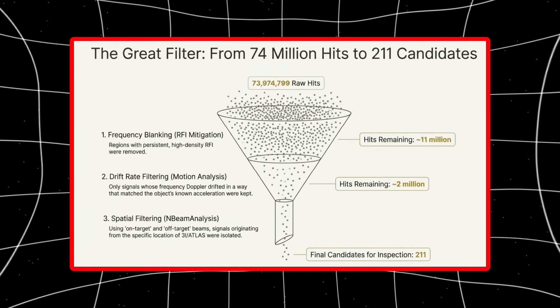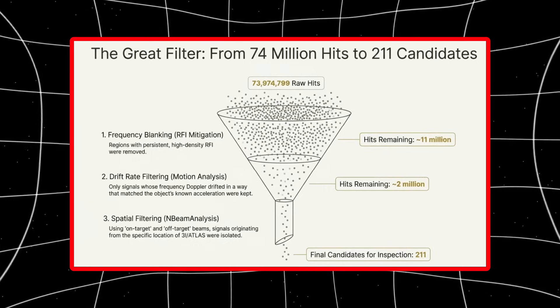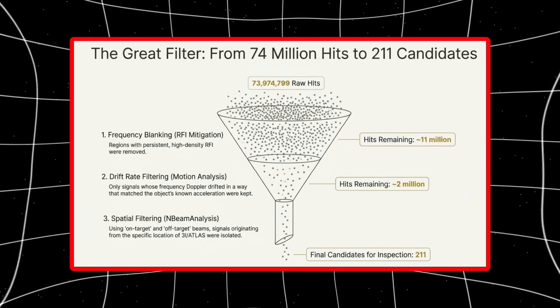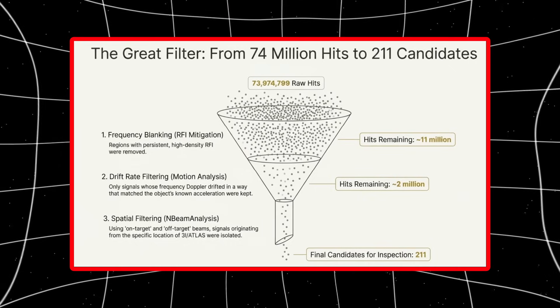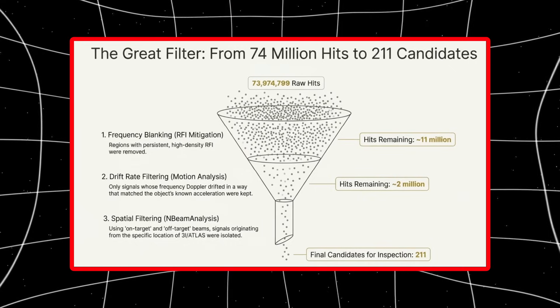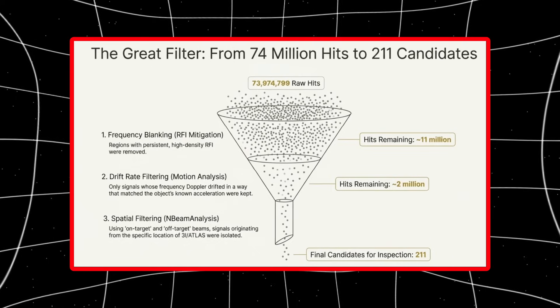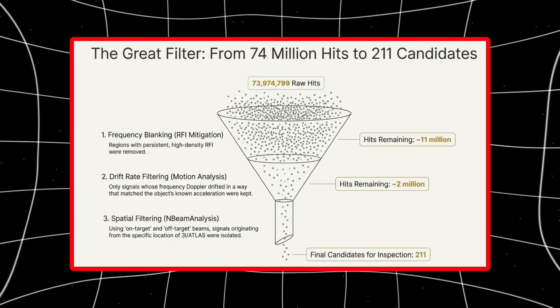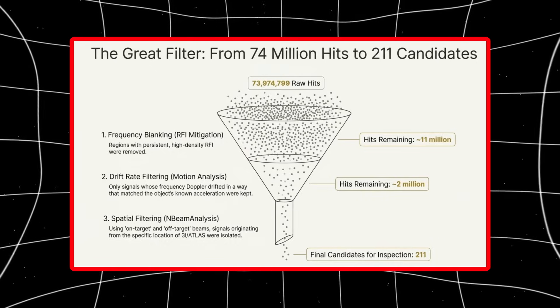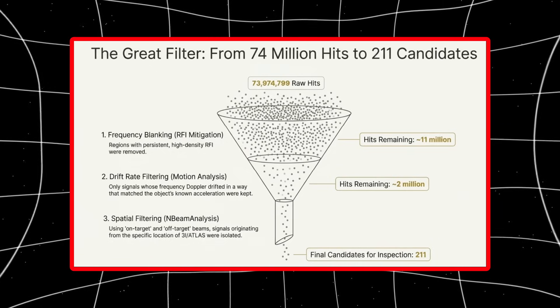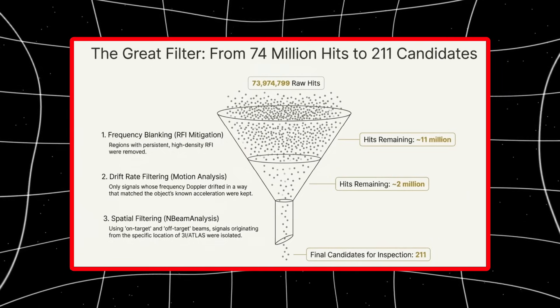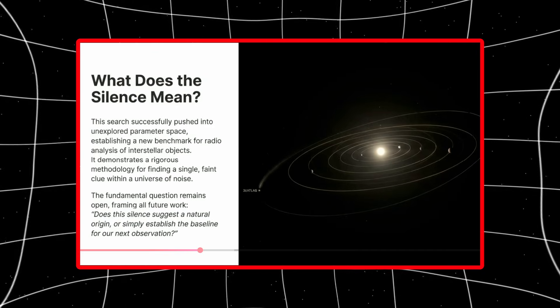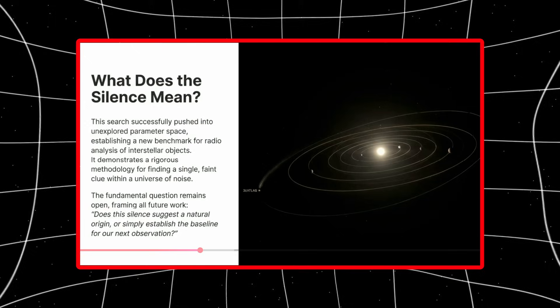Now, before you panic, that's completely normal. Most of those signals are garbage. Satellites, aircraft, ground-based transmitters, instrument noise, radio interference from every piece of electronics within a thousand miles. So the team applied a strict multi-stage filter. First, they removed known interference-heavy frequency bands. Then they filtered for signals whose frequency drift matched the precise motion of 3i Atlas. Because if something's transmitting from the object, its signal should move with it as it travels through space. Most of the remaining signals didn't match.